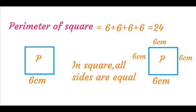In a square, all sides are equal. The perimeter of the square is 6 + 6 + 6 + 6 = 24.